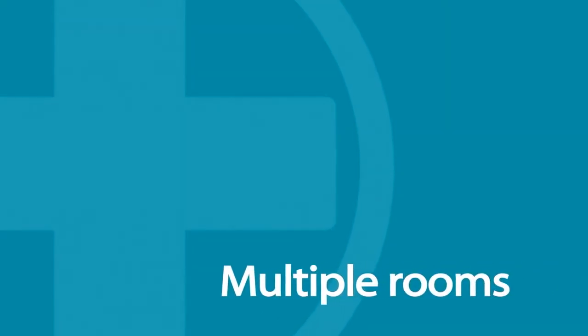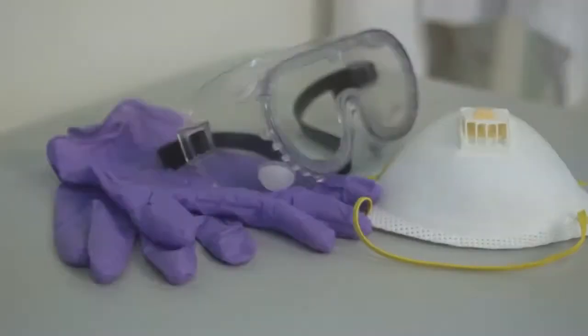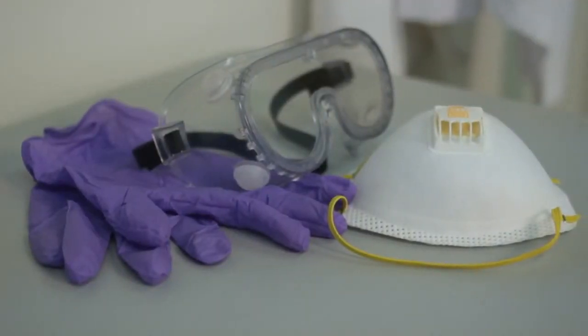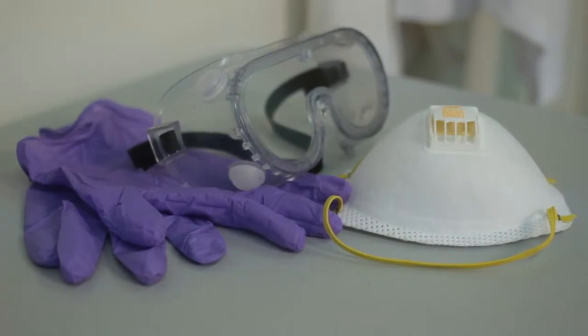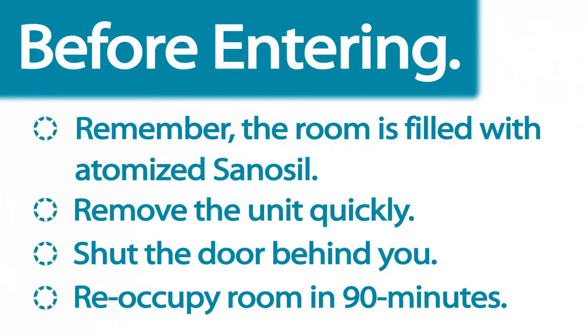When treating multiple rooms with one Halo Fogger, the unit can be removed after the dispensing cycle is complete. Before entering the room, proper personal protection equipment should be put on, including wraparound-style goggles, an N95 respirator mask or better, and gloves. Remember to close the door upon exiting.